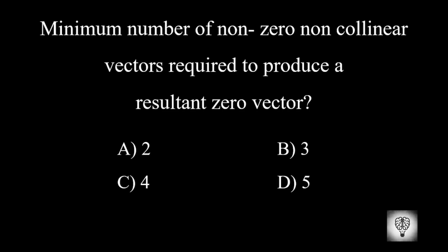Minimum number of non-zero non-collinear vectors required to produce a resultant zero vector. Correct answer is 3.